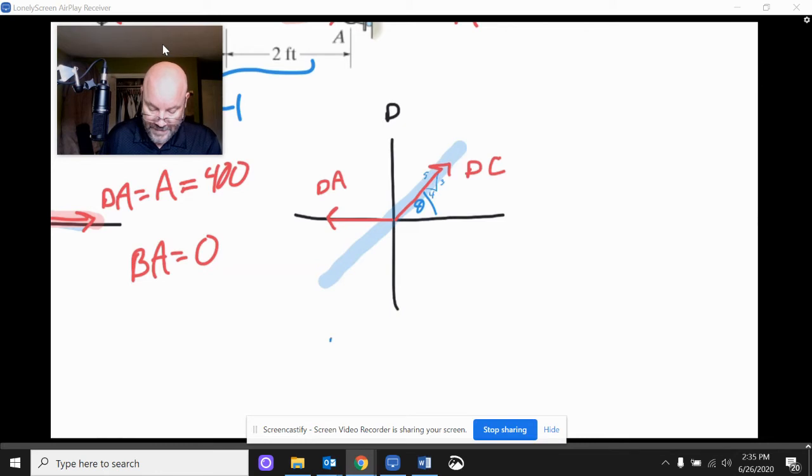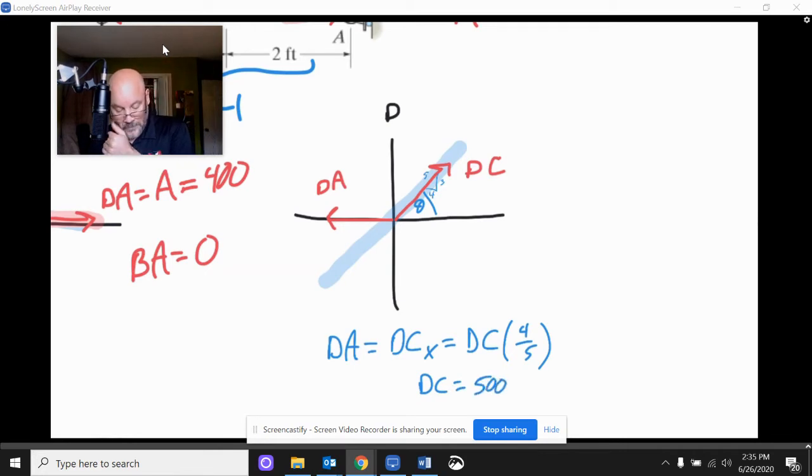Okay, so we say DA is equal to DCX, which is going to be DC onto four fifths. And then if we work out what that is, what we're going to get is that DC works out to be 500. Just like that. Cause DA, we already know is 400. Having worked that out just a second ago.